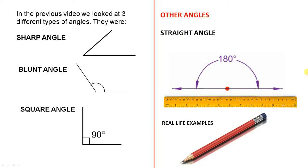In the previous video we looked at three different types of angles. They were the sharp angle between 0 and 90, the blunt angle between 90 and 180, and the square angle which was 90 degrees.